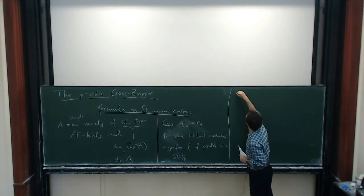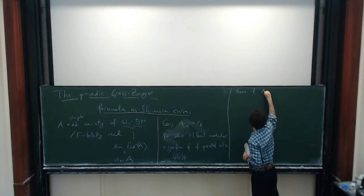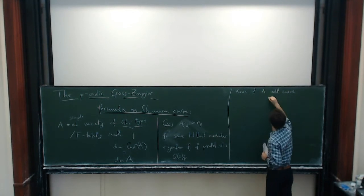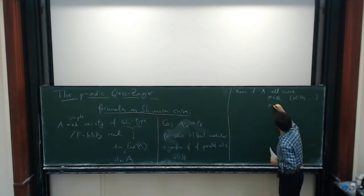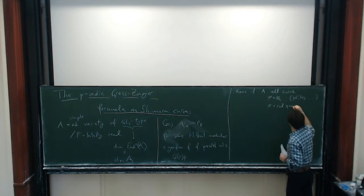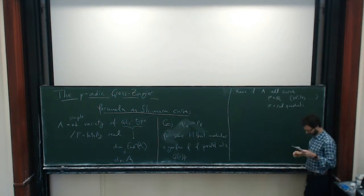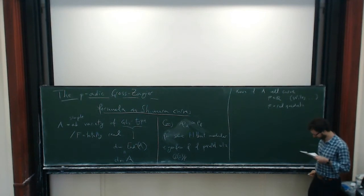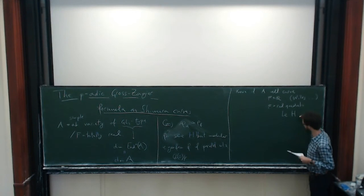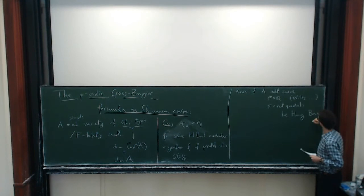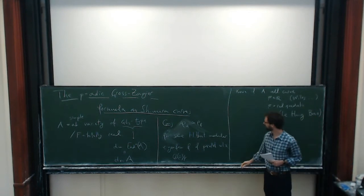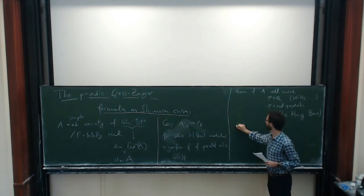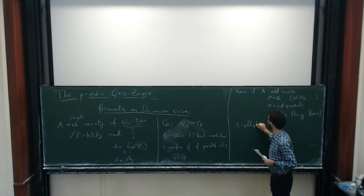This is known if A is an elliptic curve and F equals Q by the work of Wiles and others, and nowadays I think for all real quadratic fields also — this is recent work. For simplicity in this talk I'm going to assume that A is an elliptic curve; it will just simplify the notation.